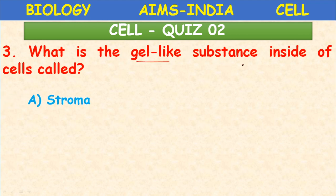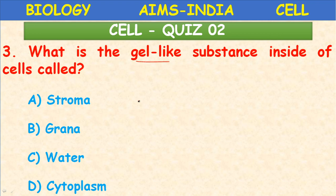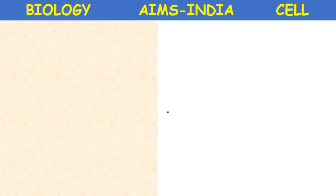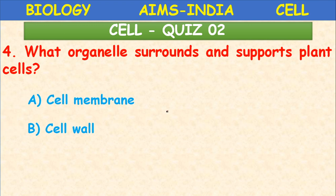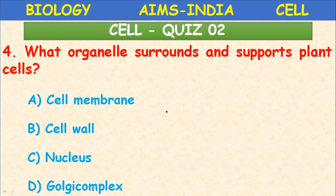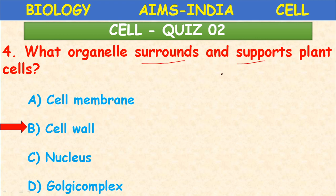Next question: what is the gel-like substance inside the cells called? The answer is cytoplasm — the cell fluid. The substance that surrounds and supports plant cells is the cell wall. The cell wall gives support, shape, and also protects the plant cell. The cell wall is made up of a primary wall, secondary wall, and middle lamella, and is mainly composed of cellulose.